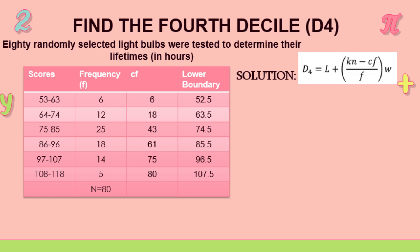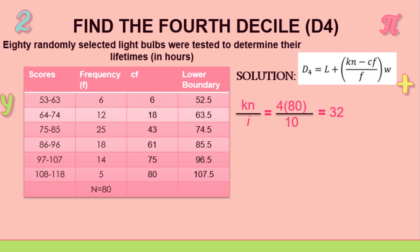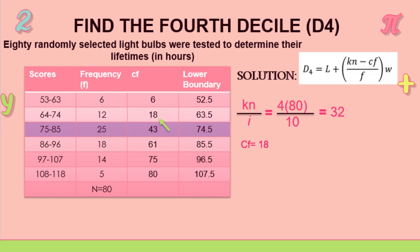So we're going to look for, and this is now 4 because the unknown is a decile, and 80 is the frequency, and then 10 because again it's decile. So 4 times 80 over 10 is 32. So we're going to look for the cumulative frequency where 32 is going to fit.